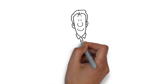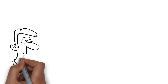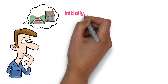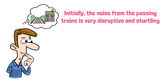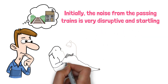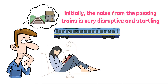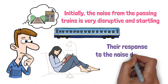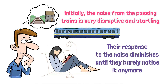Here are two examples of habituation. First, imagine someone living near a train track. Initially, the noise from the passing trains is very disruptive and startling. However, over time, the person becomes accustomed to the sound, and their response to the noise diminishes until they barely notice it anymore.